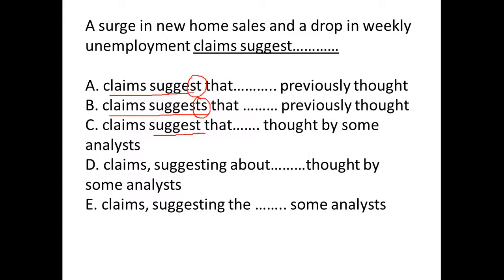If you look at the first two to three words of answer choices, in A and B, we could see there is singular plural verb error, suggest versus suggests. Again in C, we have suggest. In D and E, after claims, we have a comma suggesting. Now, if you look at A and B, we have singular plural verb error. That means we have to see the subject.